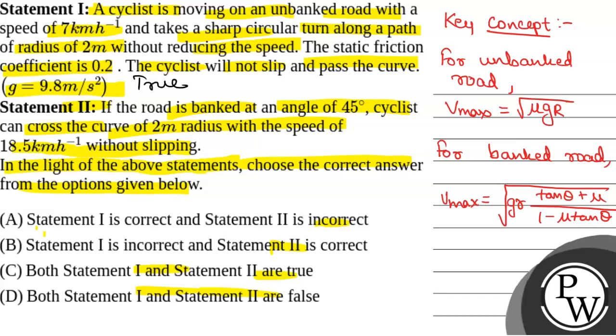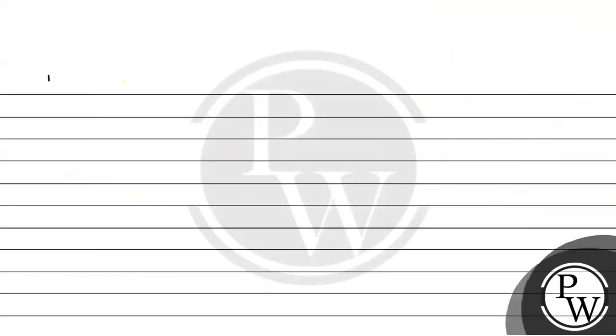Now, in Statement 2, we have the road is banked at an angle of 45 degrees. So theta equals 45 degrees and radius is 2 meters. So we will find maximum safe velocity for Statement 2, that is for banked road.